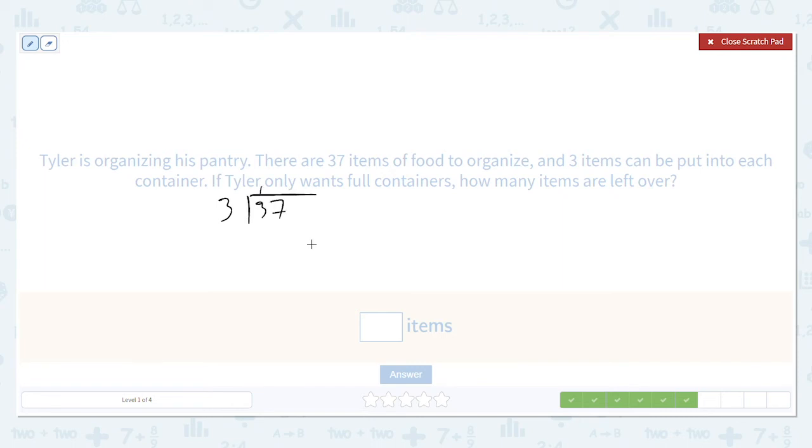Seven goes in one time. Subtract, get zero, bring down the seven. We'll go in twice. Two times three is six. Subtract, and we get a remainder of one. There's one item left over after we fill 12 containers.